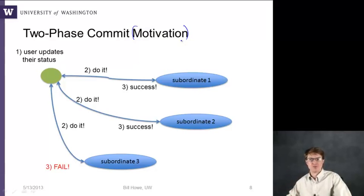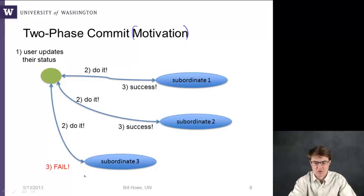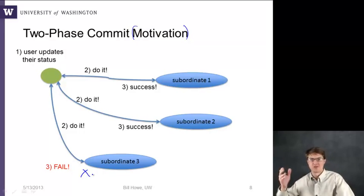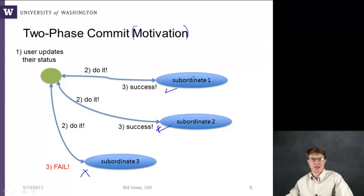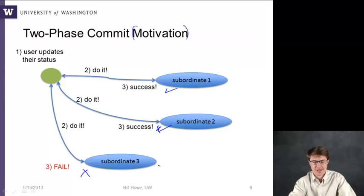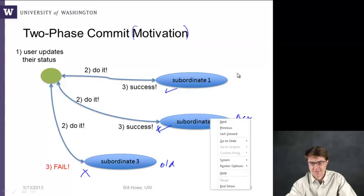— then you could have some of them report back success but one of them could fail. Now you're in trouble, because that one has the old value because it failed — either you didn't hear back from the server at all, or it responded with a failure because of a disk problem. The other two have already successfully applied the transaction. So now you're in an inconsistent state: subordinate three has the old value and the others have the new value.